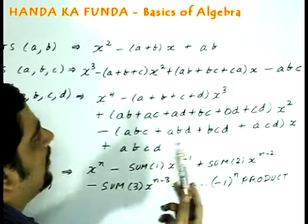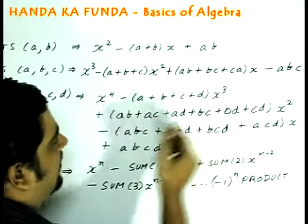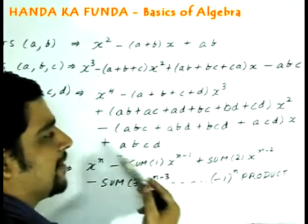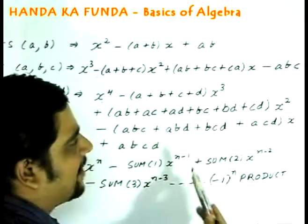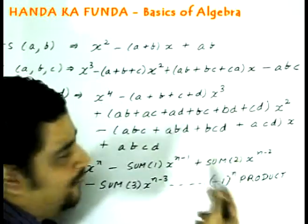Then the next term always starts with a minus, then the next one with a plus, then minus. In this one minus, plus, minus, plus. So that is the pattern which will occur always in an algebraic equation with 4 roots, 3 roots, or n roots.